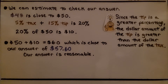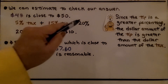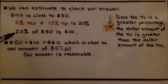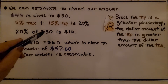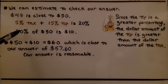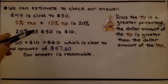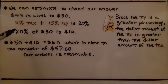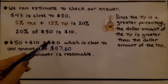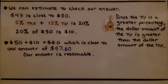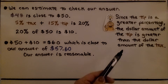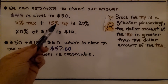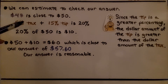We can estimate to check our answer. $48 is close to $50, and a 5% tax plus a 15% tip is 20%. We find 20% of $50 by doing 20% written as a decimal times $50. Remember, when we see a percentage of a number, we think of the word 'of' as a multiplication symbol. That's $10. So $50 plus $10 equals $60, which is close to our answer of $57.60, so our answer is reasonable. Since the tip is a greater percentage, the dollar amount of the tip is greater than the dollar amount of the tax.